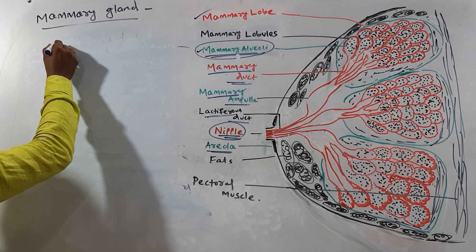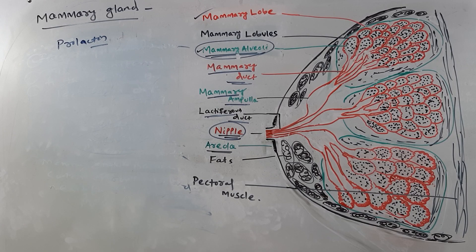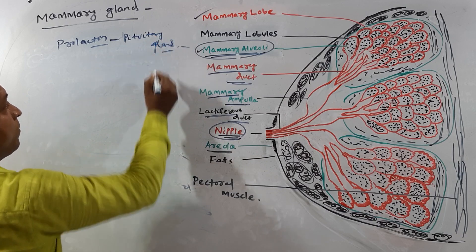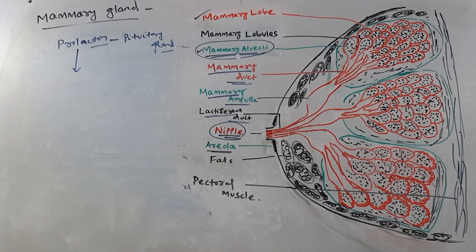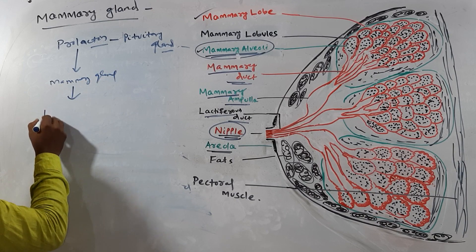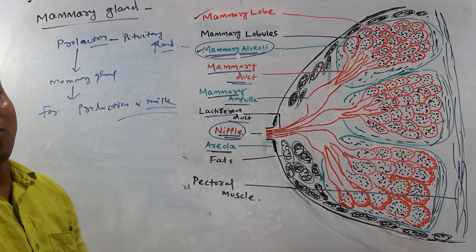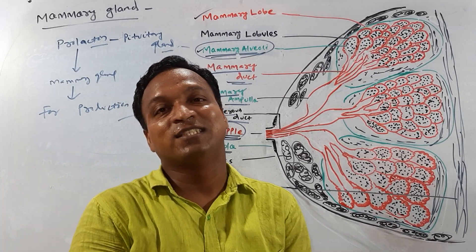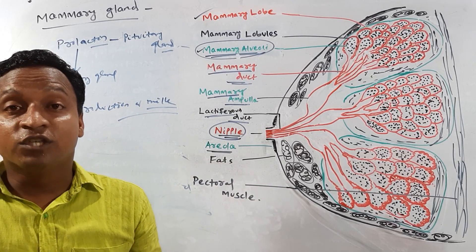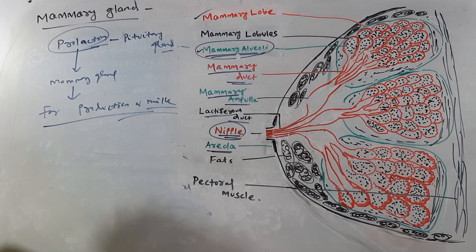One hormone called prolactin is secreted from the pituitary gland. This prolactin hormone stimulates the mammary gland for the production of milk. This is an important question for CHSE as well as NEET exams: which hormone stimulates the production of milk? The answer is prolactin.